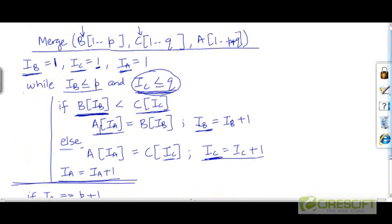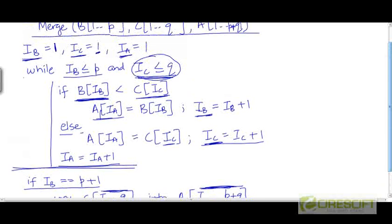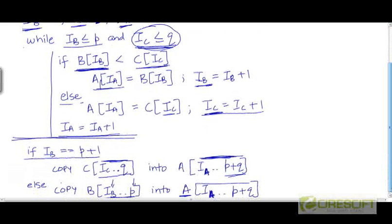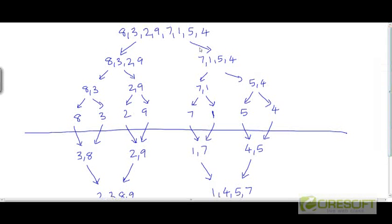This is the pseudocode for the merge procedure. Now let's see how merge sort works on a sample input of size 8. We have already seen how the merge step works on two sorted arrays. Now we are going to see an example of how the full merge sort algorithm works on an input array A with these elements.